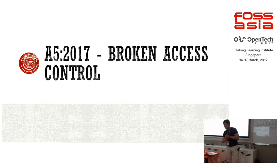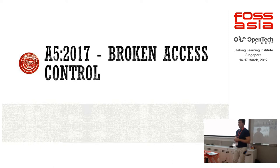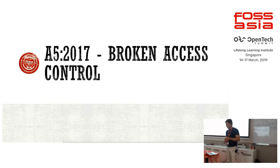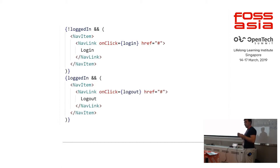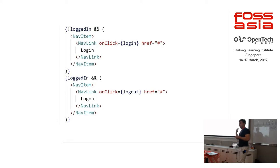Broken access control is another common family of security issues when developers just don't think about or don't check all their permissions on the client side and the server side. In terms of React, if you check any more or less big enterprise application, you'll see spaghetti code like this — if your role equals this, then render something. If you have code like this, it's really hard to maintain. Say you add a new security role and have to change your interface based on that — you have to go through all your code and apply the fix.